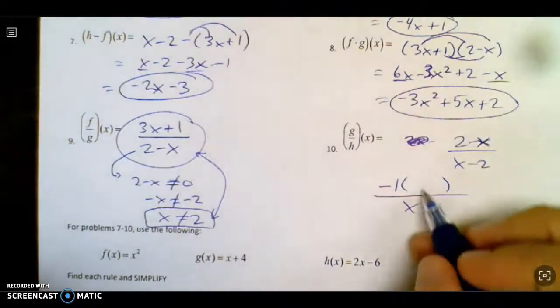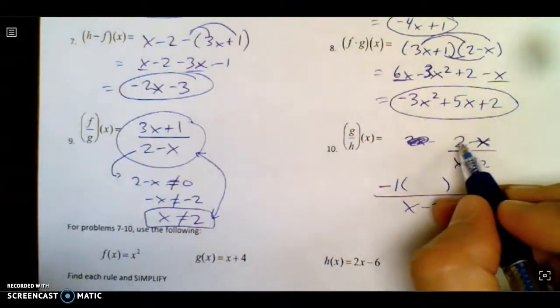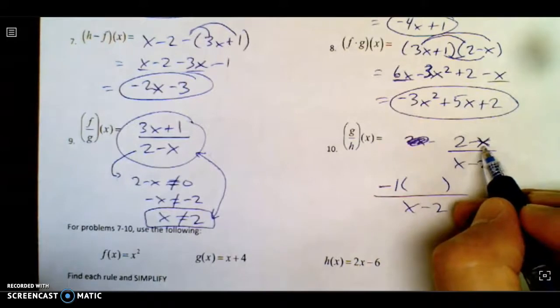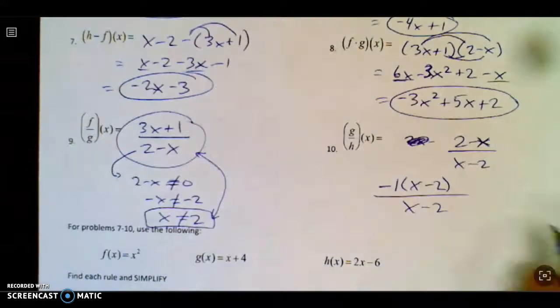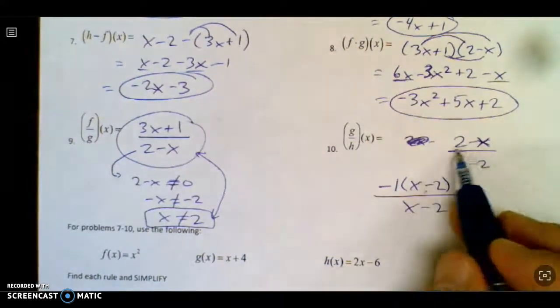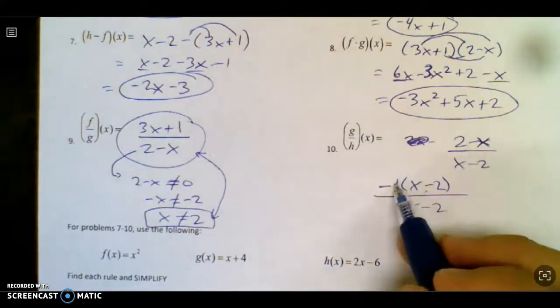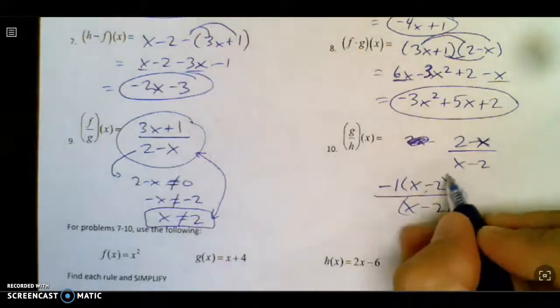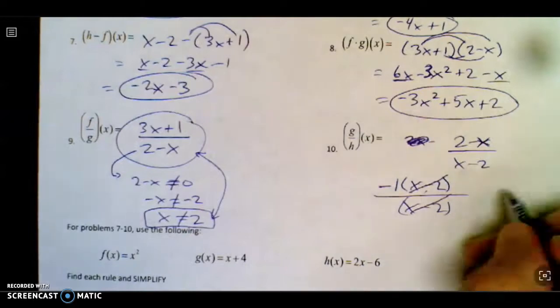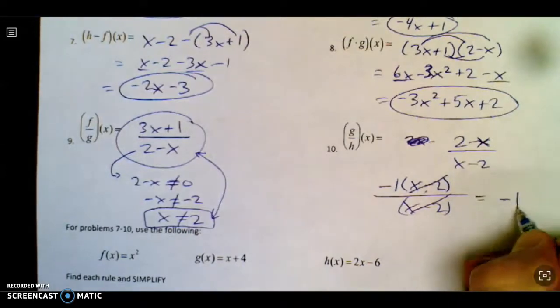Now if I take out a negative 1, that makes this guy negative and this guy positive. So it would become x and a minus 2. It's basically a little trick in math. If you ever want to switch the order of a subtraction problem, you can take out a negative 1. And then these guys cancel because they're matching. So your answer is actually negative 1.